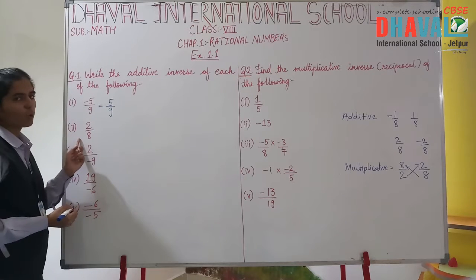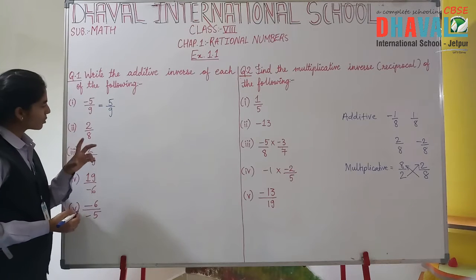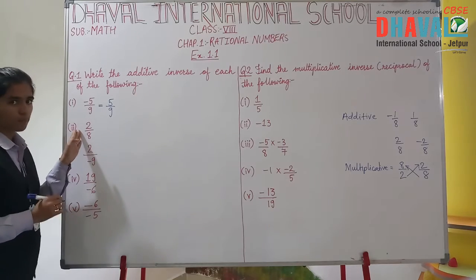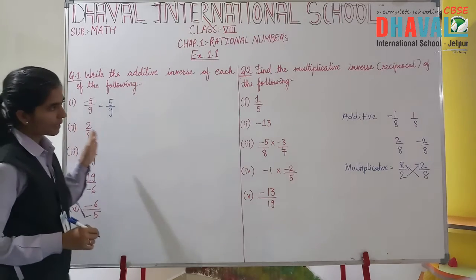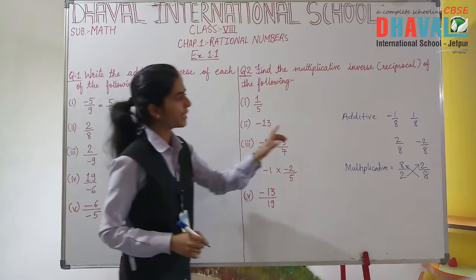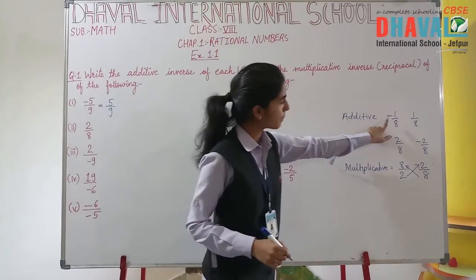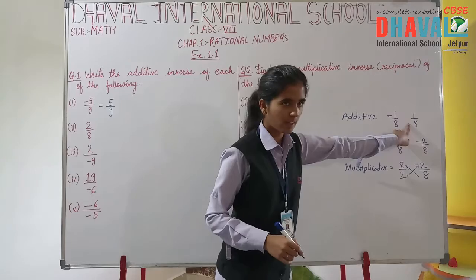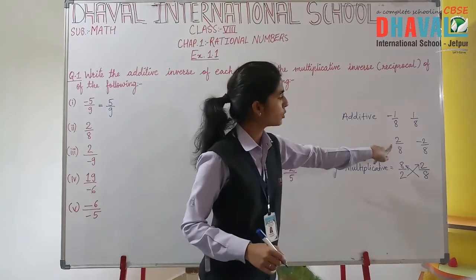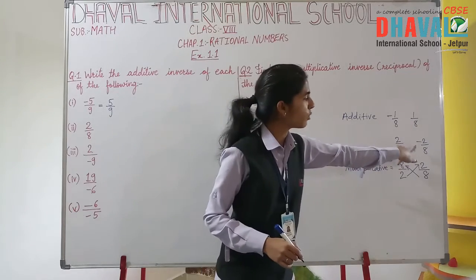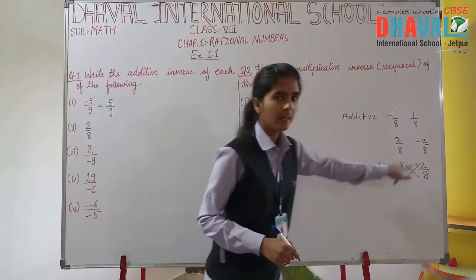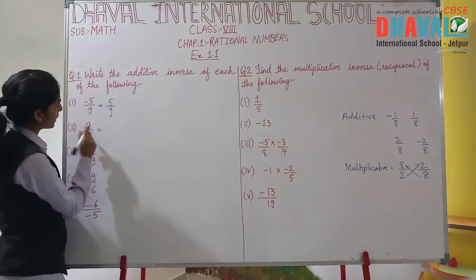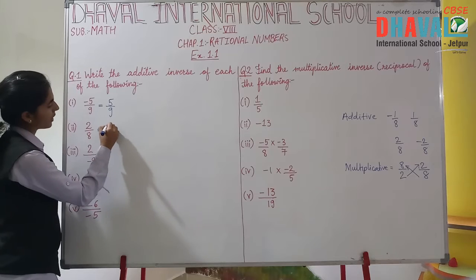The second number we have is 2 upon 8. As you can see, this number is positive. Once again I am saying: if the number is positive, its additive inverse will be negative. If this particular number is negative, its additive inverse will be positive.